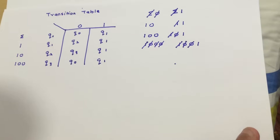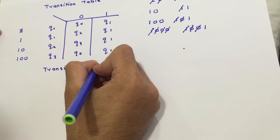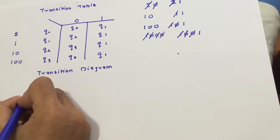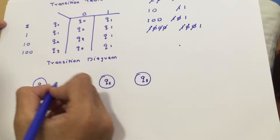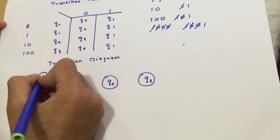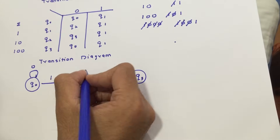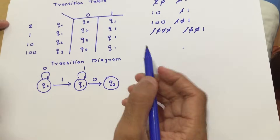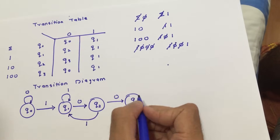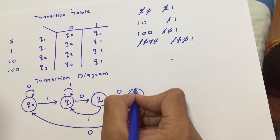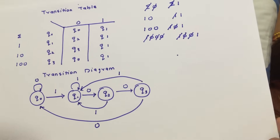Looking at the transition table, we now draw the transition diagram with states q0, q1, q2, and q3. On 0, q0 stays in q0; on 1, q0 goes to q1. q1 on 0 goes to q2; q1 on 1 remains in q1. q2 on 0 goes to q3; q2 on 1 goes to q1. q3 on 0 goes to q0; q3 on 1 goes to q1.